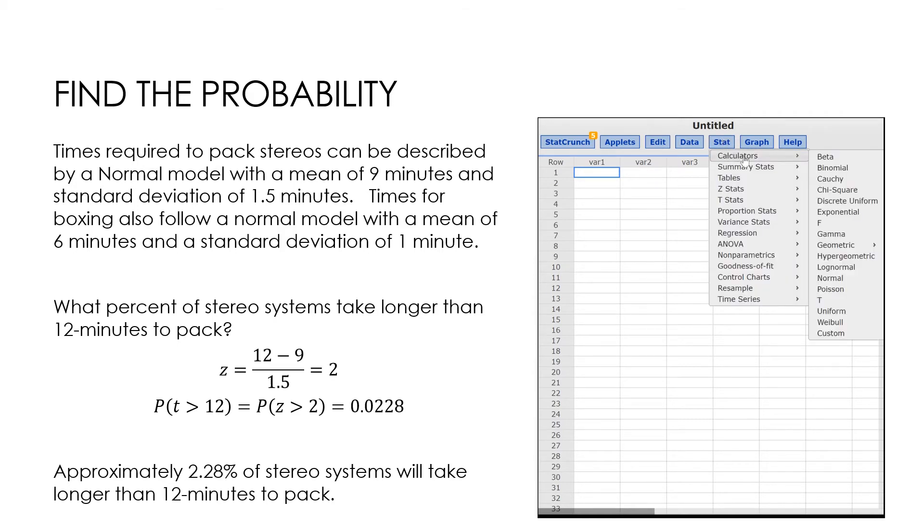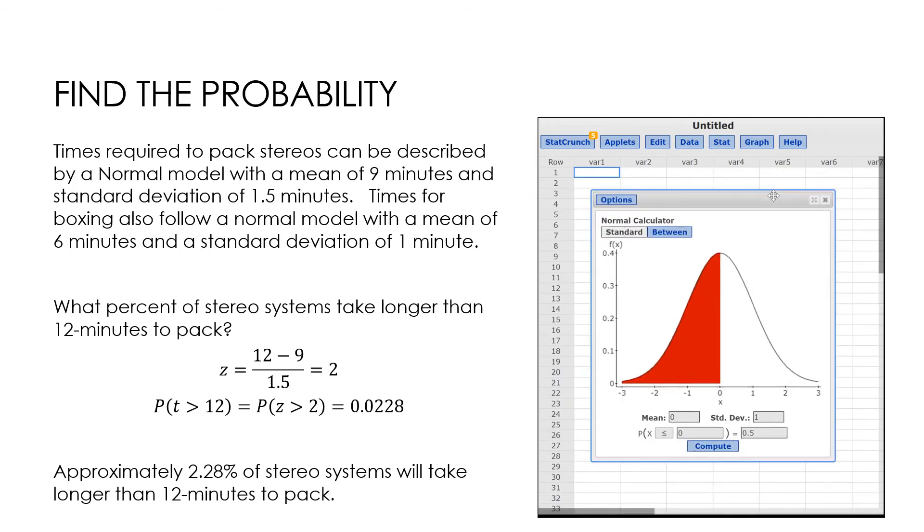So I'm going to go to stat calculators normal, because I'm dealing with a normal model. I've turned it into a Z-score, so my mean and standard deviation stay exactly where they are. I turn that into a 2, and then I have to determine, based on the question, what should this be? So the question says, what percent of stereo systems take longer than 12 minutes? So I'm going to say greater than 2 as a Z-score.